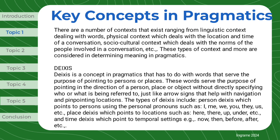Deixis. Deixis is a concept in pragmatics that has to do with words that serve the purpose of pointing to persons or places. These words serve the purpose of pointing in the direction of a person, place, or object without directly specifying who or what is being referred to — just like arrow signs that help with navigation and pinpointing locations. The types of deixis include person deixis, which points to persons using personal pronouns such as I, me, we, you, they, us, etc.